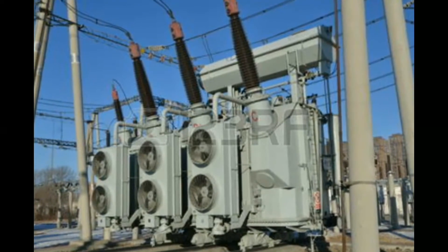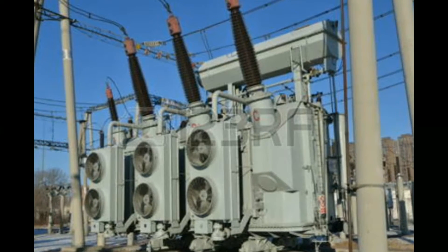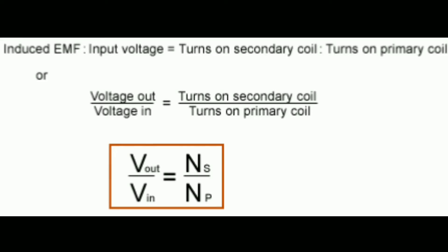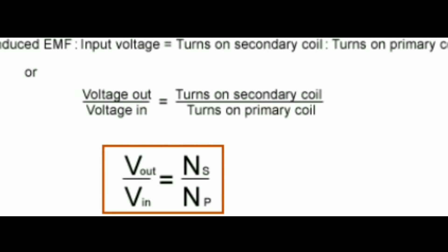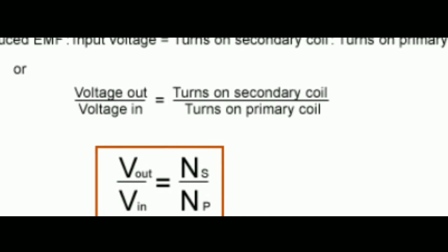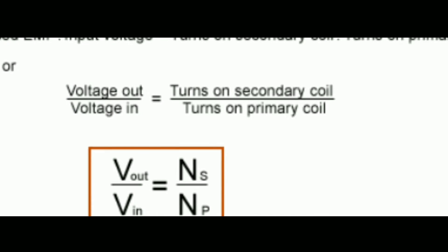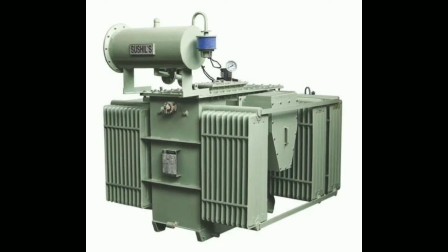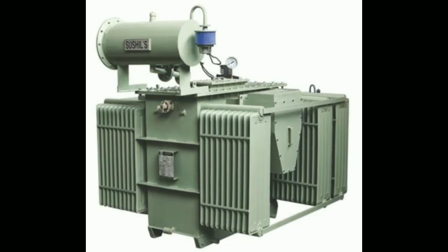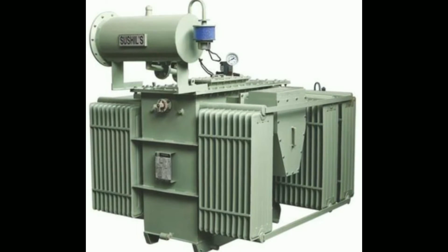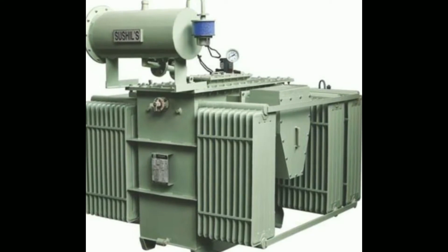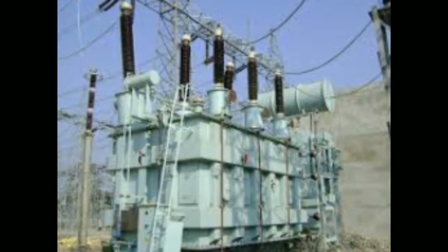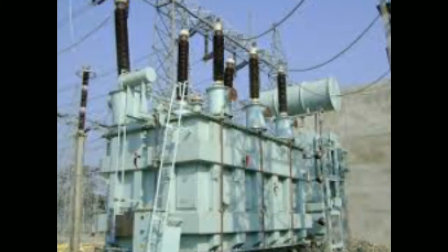A higher voltage level results in a decrease in current and hence a decrease in losses. But at the point of use, we need the exact level of voltage and current, so we again step down the voltage. As a result, we get the same correct level of current and voltage at our homes. This is the reason why we use transformers in the electrical supply system.